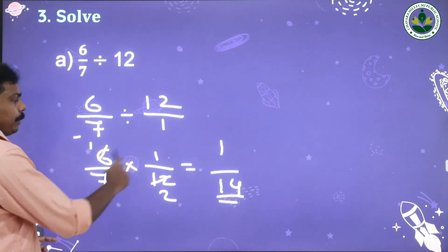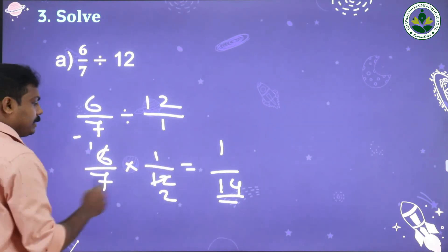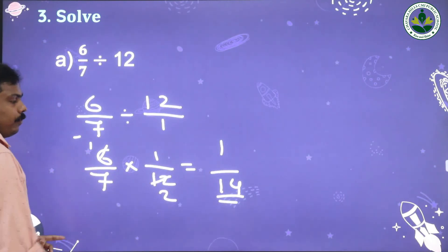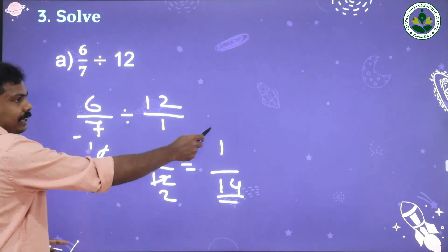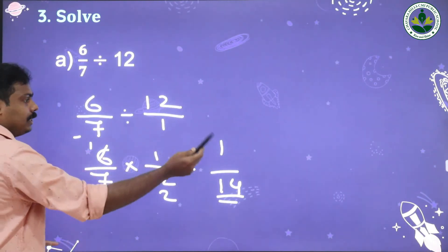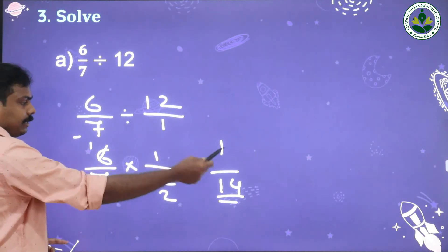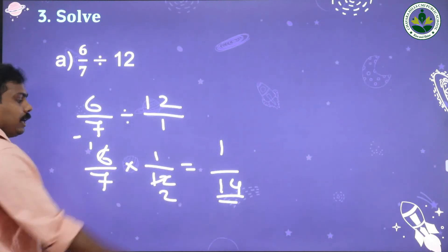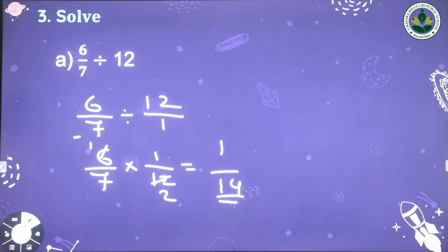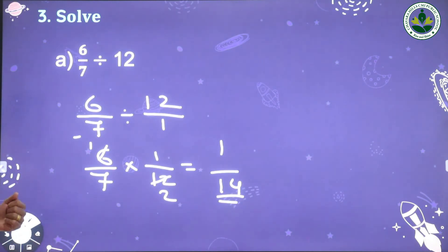Or just multiply directly: 6 ones are 6, and 7 twos are 84. Then cancel those two numbers — 6 ones are 6, 6 fourteens are 84. Either way the answer is 1/14, which is already in lowest form.